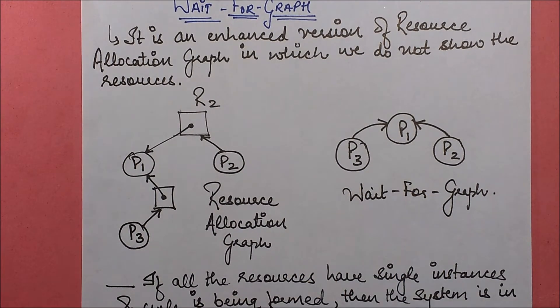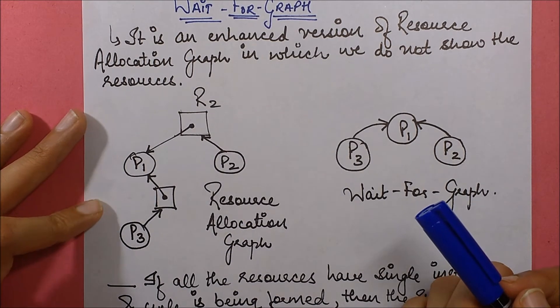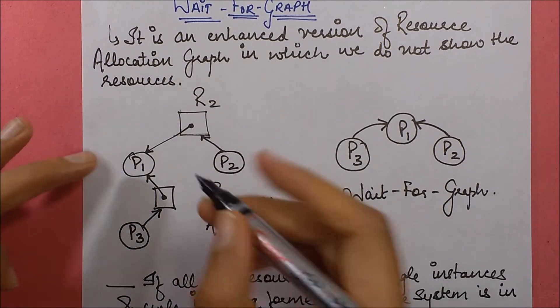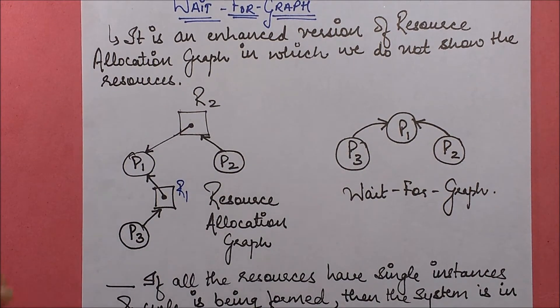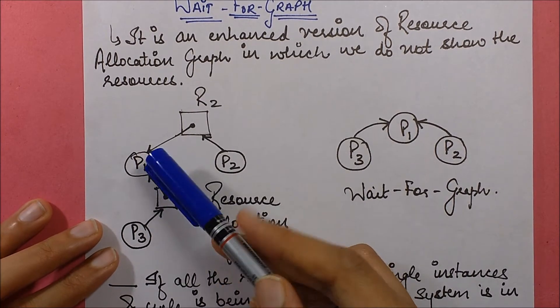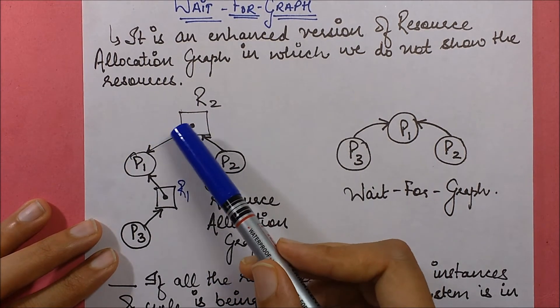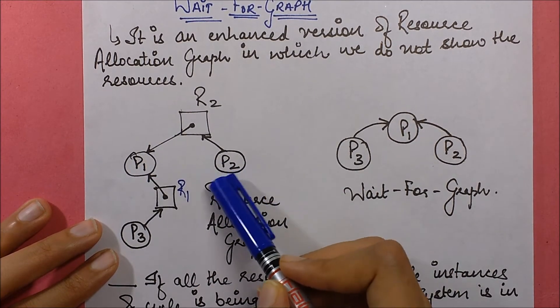Here's an example. This is a resource allocation graph. Let's say this is resource R1. What is this depicting? This is showing that P3 is requesting R1, whereas R1 has been allocated to P1. Then R2 has also been allocated to P2. P1 and P2 is requesting R2.